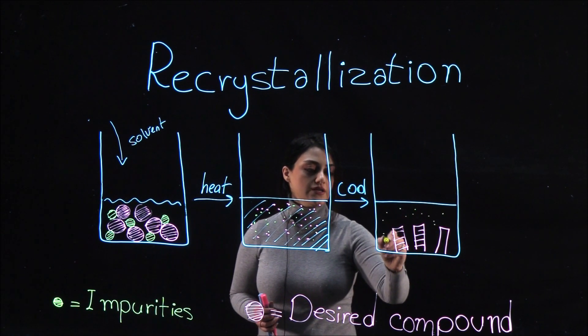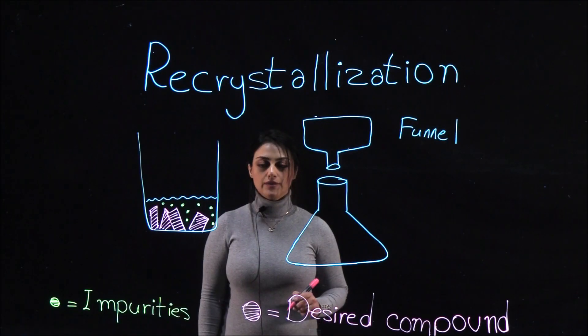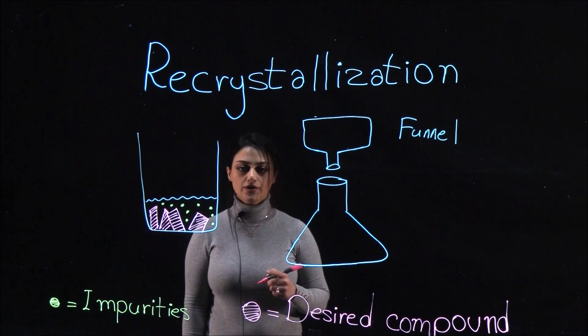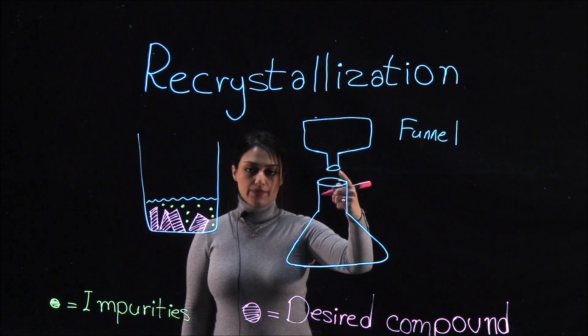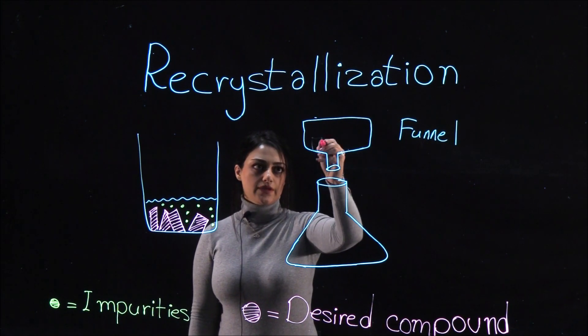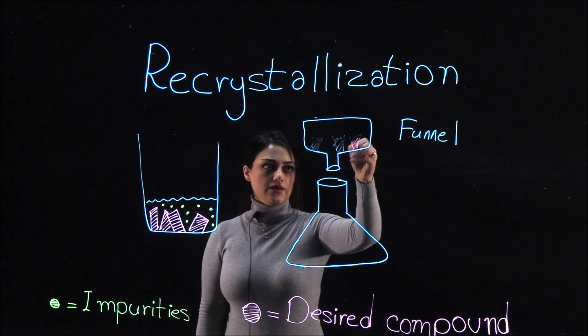When the compound has crystallized, it can be isolated from the solvent through filtration. In the funnel there is filter paper. We pour our solution inside the funnel. The crystals remain in the funnel and the solvent and impurities pass through the filter.